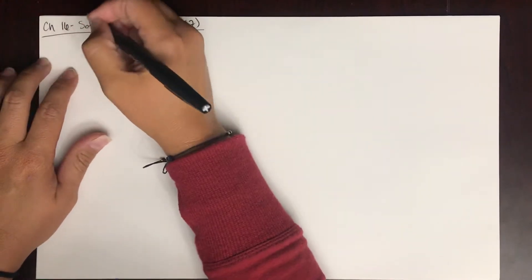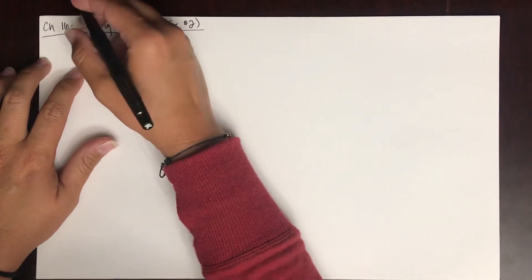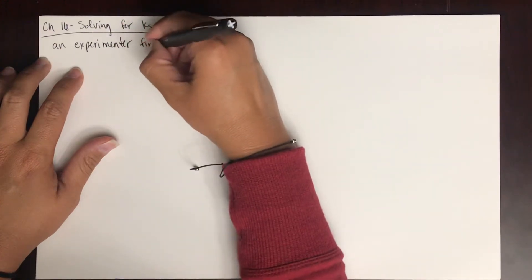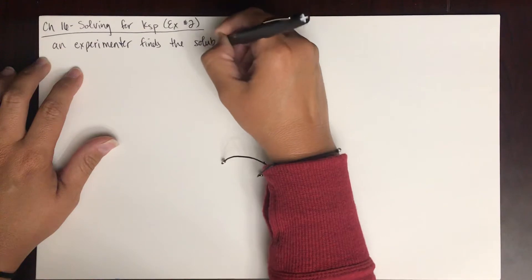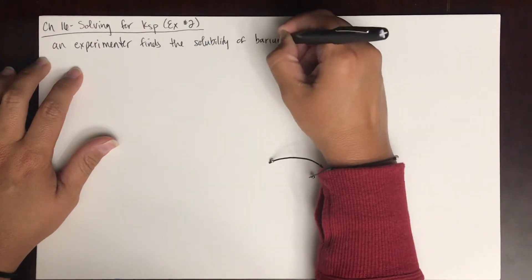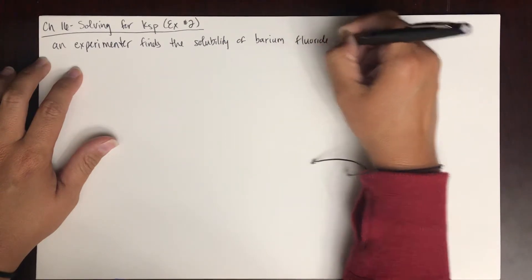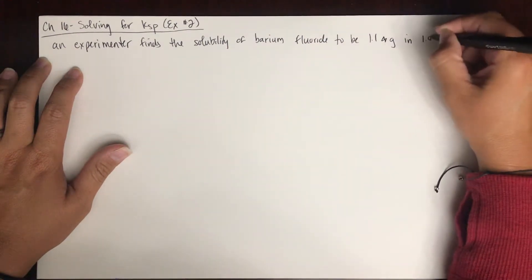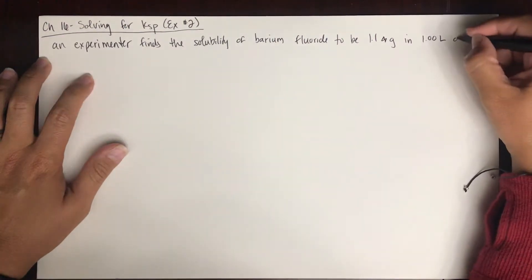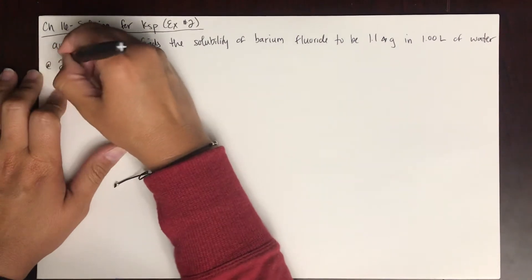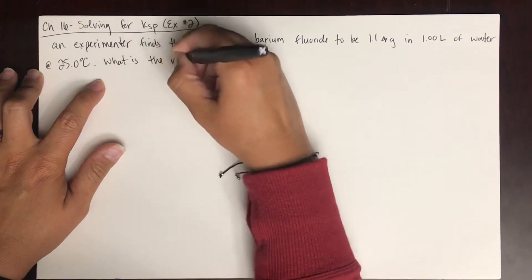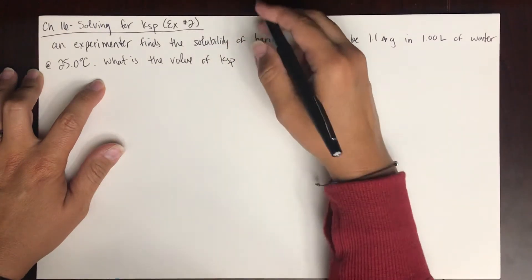All right, let's look at another example of solving for KSP. So here's a problem that says an experimenter finds the solubility of barium fluoride to be 1.1 grams in 1.00 liters of water at 25 degrees Celsius. What is the value of KSP at this temperature?